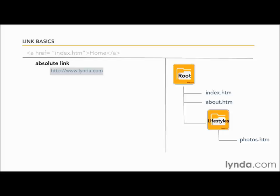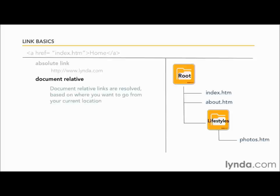For links outside of your site, absolute links are required. Document relative and site root relative links are very similar. They offer you a way to resolve links within your own internal site. Document relative links are by far the most popular. Put simply, they are resolved by specifying the path from the current page to the desired page using the site file and folder structure.